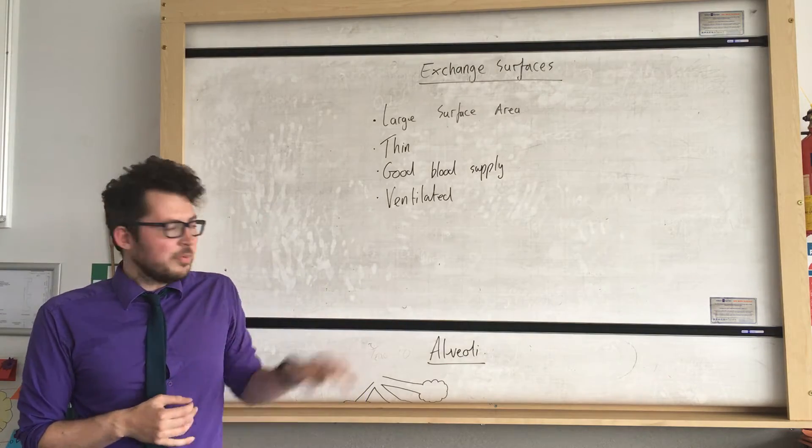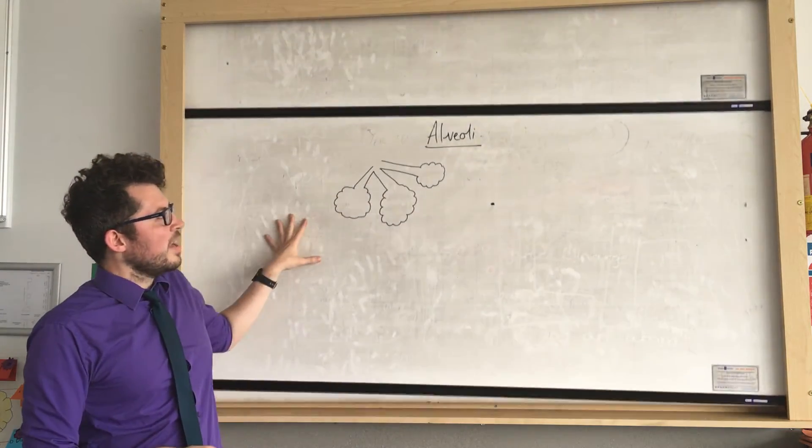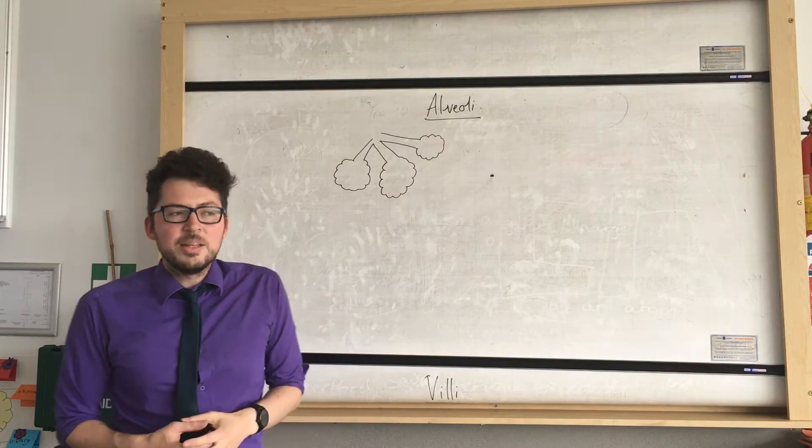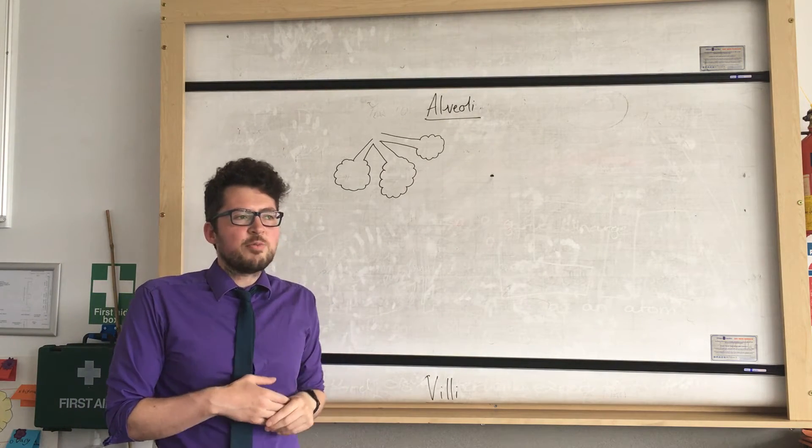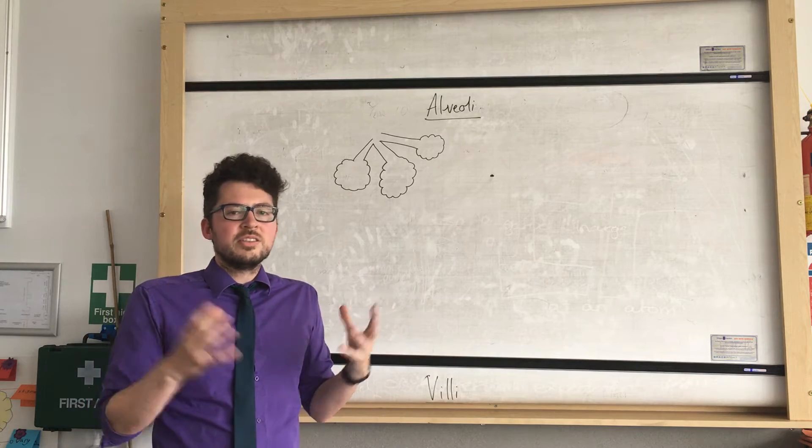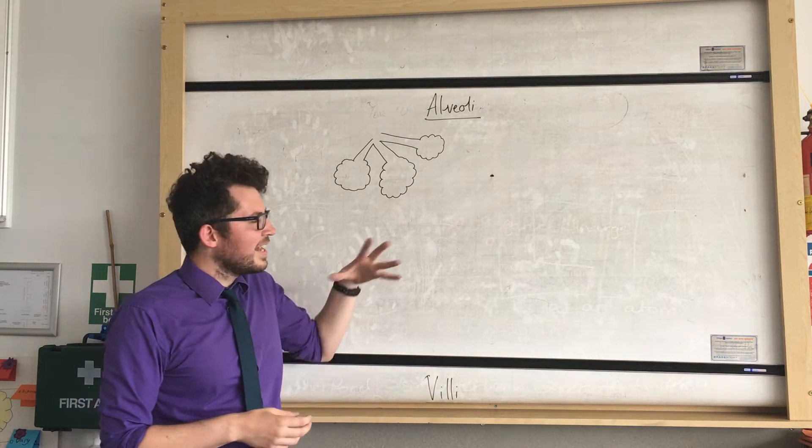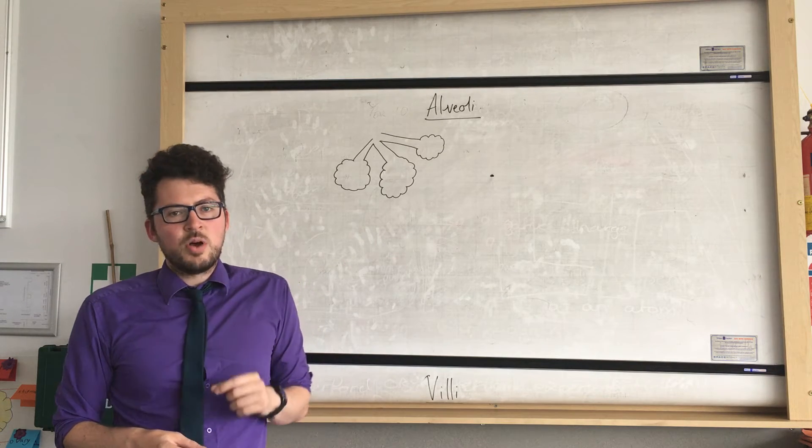So there are a couple of examples we need to know. First one is the alveoli. Alveoli are found in our lungs, and you may have heard the fact that if we unfolded all the alveoli in our lungs it would cover the area of a tennis court, which means that's a very large surface area and it allows us to get oxygen into our bloodstream.